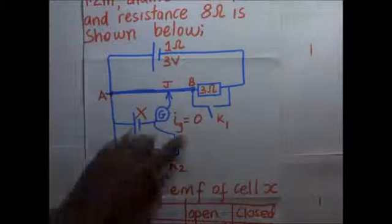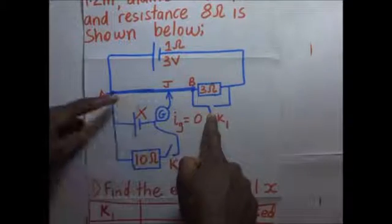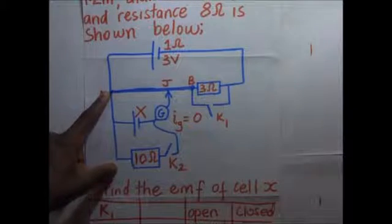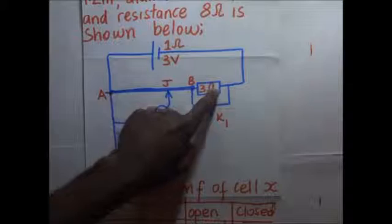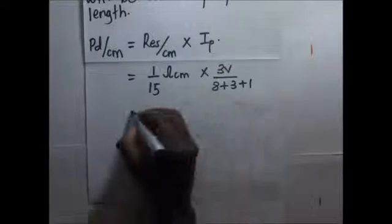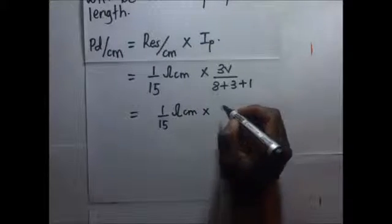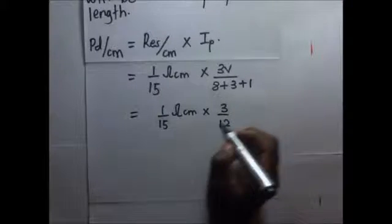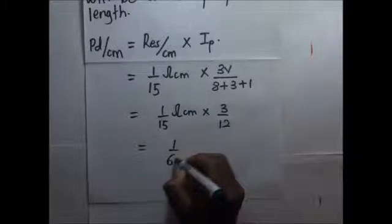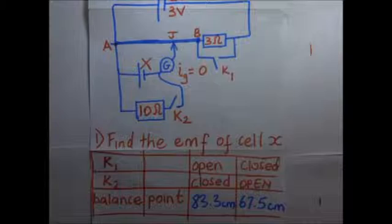The new effective resistance has changed because we have opened k1, so we now consider 8 ohms (wire) + 3 ohms + 1 ohm (internal) = 12 ohms. The driver current becomes 3/12 amperes. Therefore, the new PD per centimeter = 1/15 × 3/12 = 1/60 volts per centimeter. We have obtained our new PD per centimeter when k1 is open and k2 is closed.